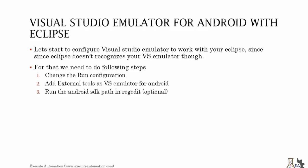To configure your Visual Studio Emulator for Android to work with Eclipse, first you need to change the run configuration, then you need to add it to the external tools, and also you need to add the Android SDK path in regedit — if you don't install the Android SDK as an exe, but rather just unzip it into your machine. We'll quickly walk through each of these steps one by one.